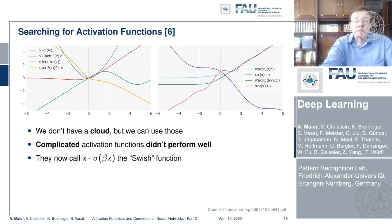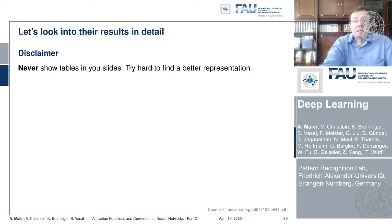One general result that they came up with is that complicated activation functions generally didn't perform very well. They found something that is X times sigma 8 beta X, which they call the swish function. So this seemed to be performing quite well. And actually this function that they identified using the search has already been proposed before as sigma 8 weighted linear unit in reference number 7.